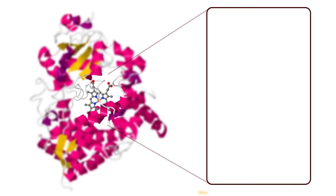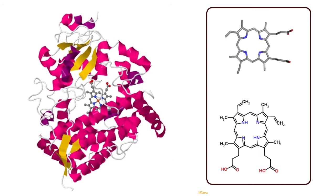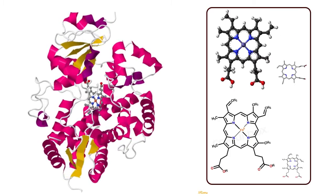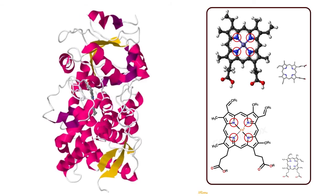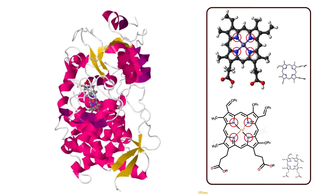Heme consists of this complex organic ring structure called protoporphyrin, to which a single iron atom is bound. The iron atom is bound to the four nitrogens of the porphyrin ring system, forming a plane.